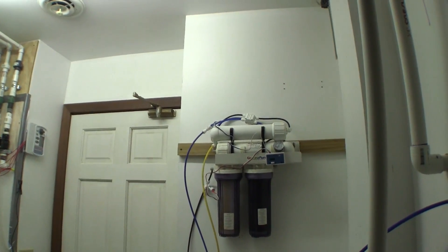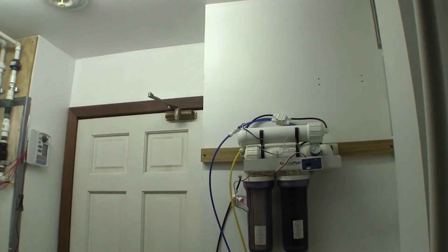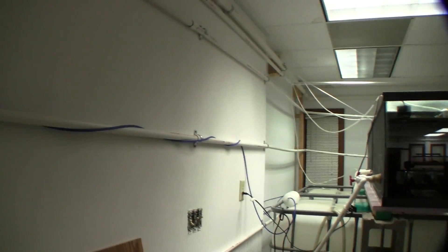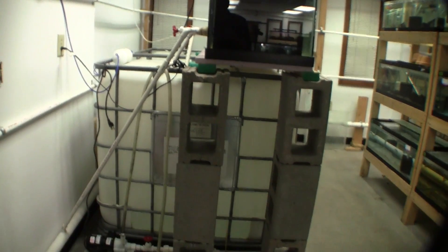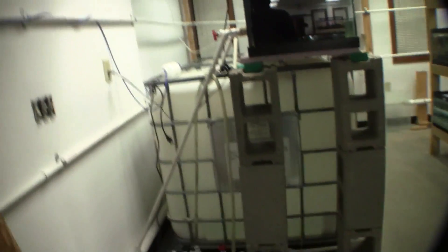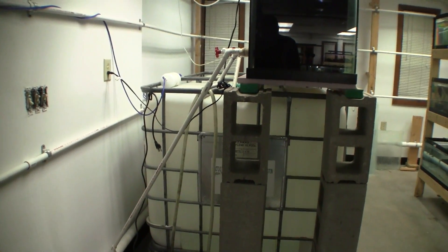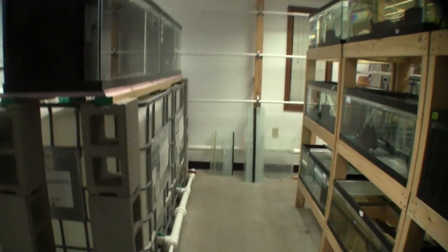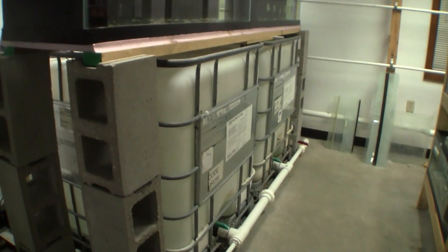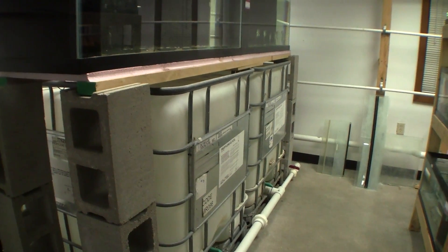So now the RO system is running. Water is exiting through this blue line, goes through this wall, goes along the wall and ends up going into my two holding vats which hold RO water. Each of them holds about 220 gallons of water.